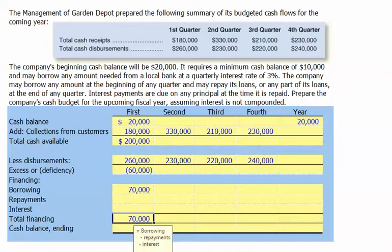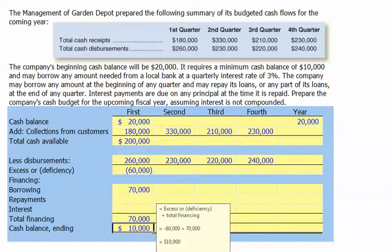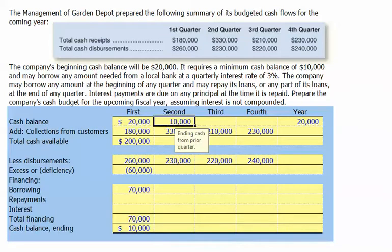Our total financing needs are $70,000, and our ending cash balance is $10,000. That $10,000 ending cash balance becomes our beginning cash balance for the second quarter.